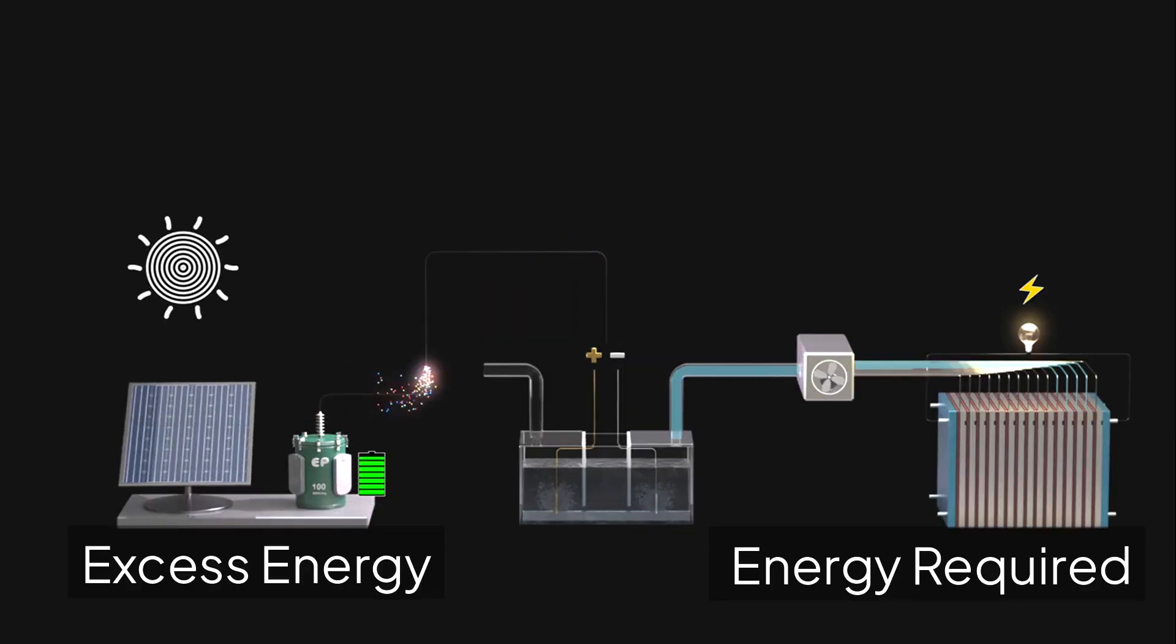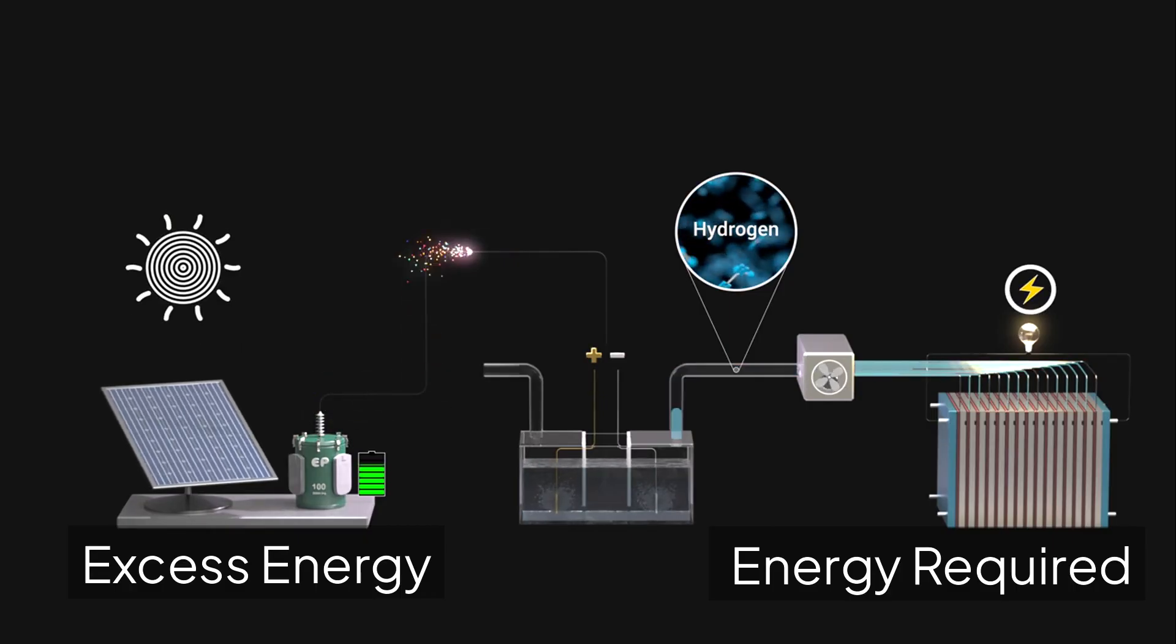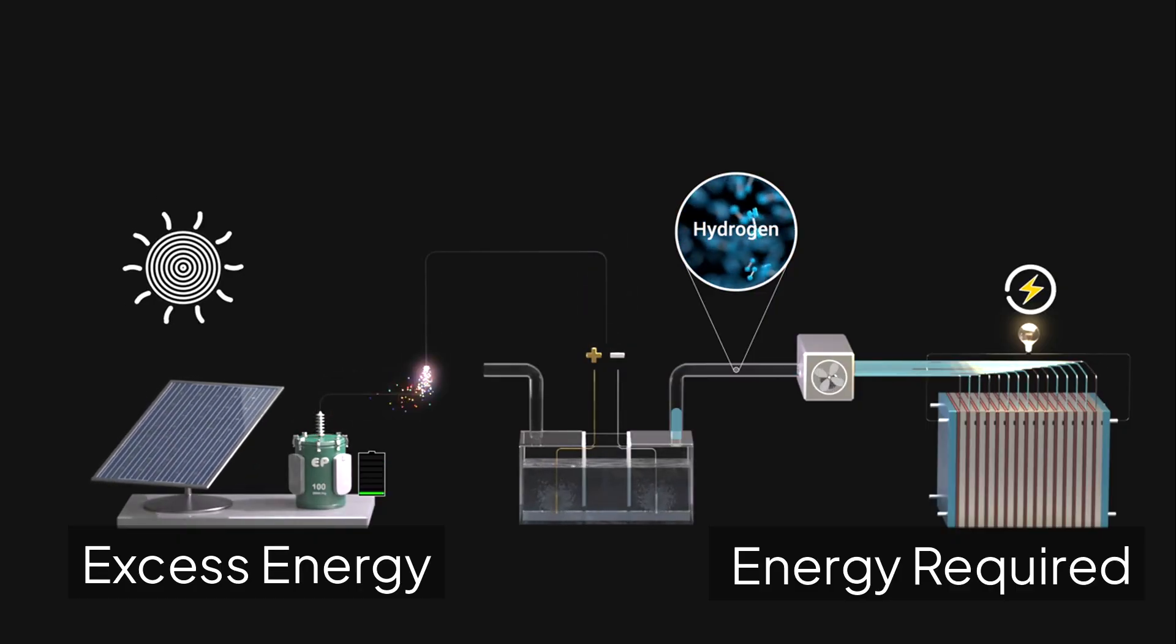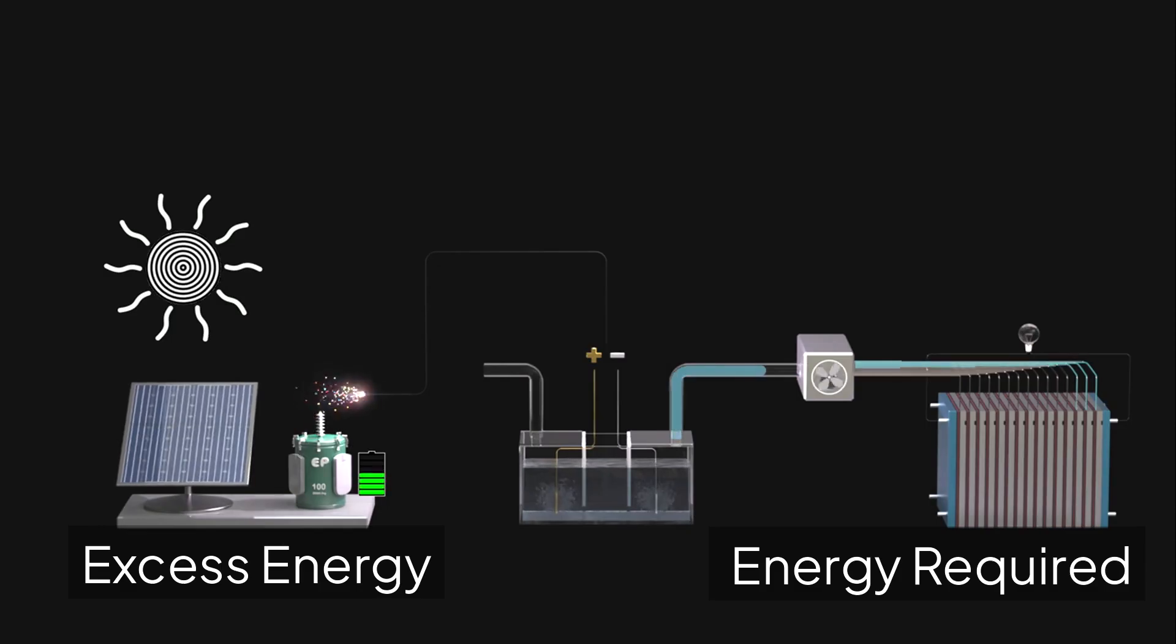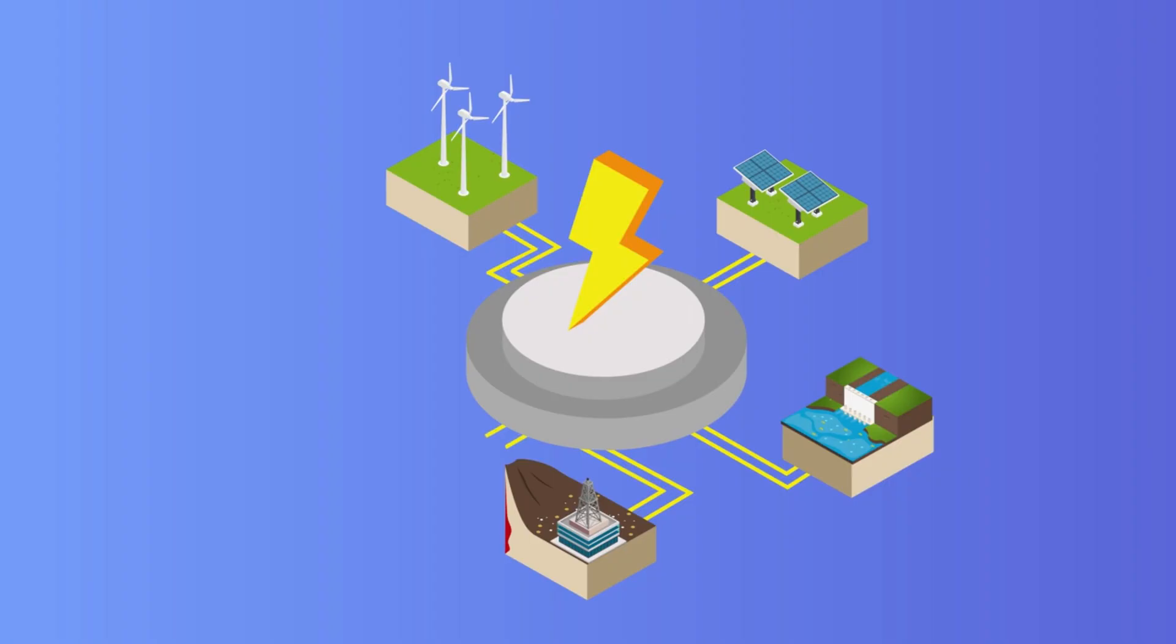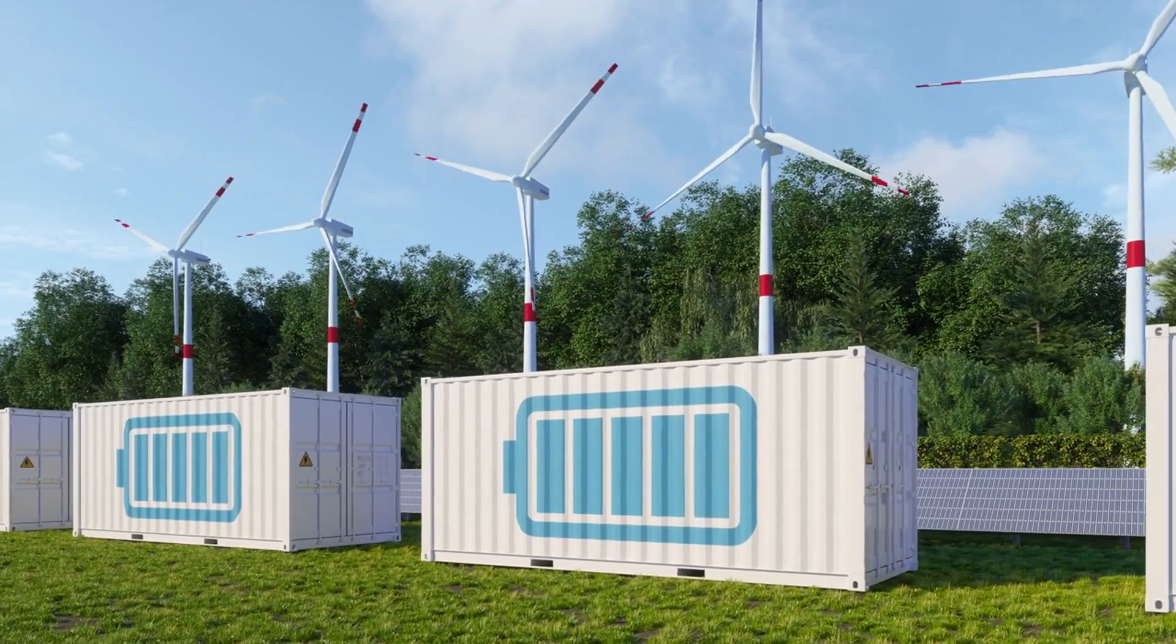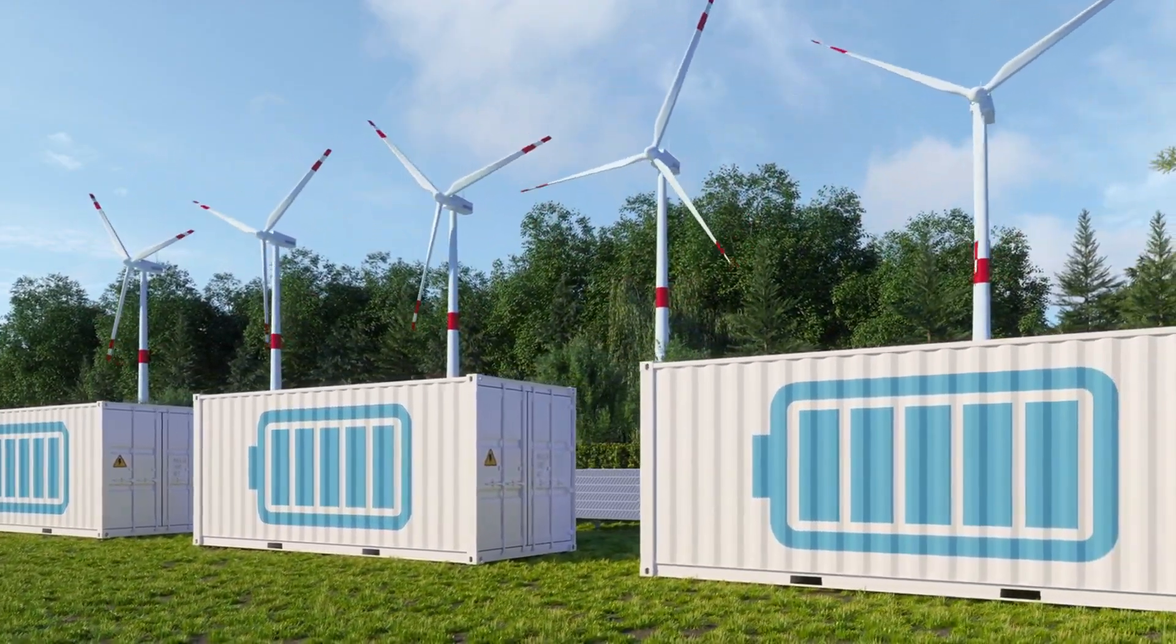RESSOFCs are like giant rechargeable batteries, but much more powerful. When there's excess solar or wind energy, RESSOFCs store it by converting electricity into hydrogen. Later, when energy is needed, that hydrogen is converted back into electricity. This could power microgrids in remote locations, supply industrial heat and electricity, and produce hydrogen for clean transportation. This makes them perfect for long-term energy storage—days, weeks, even months—something traditional batteries can't handle well.